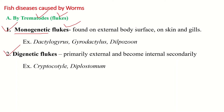Monogenetic flukes are found attached externally on the body surface — on the skin and on the gills. Some examples include Dactylogyrus, Gyrodactylus, and Diplozoon. These are some trematodes considered as monogenetic flukes.